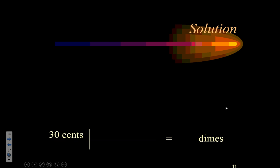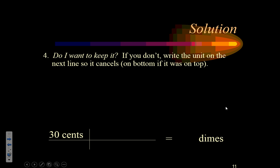Now, the key to this whole process is really the solution. And that's steps four, five, and six. Step four is a question. Do I want to keep it? If you don't, you're going to write the unit that you want to get rid of on the next line so that it cancels. So in the case of 30 cents, the it is a unit. That's really important that you need to understand. The it here is the unit. It's not 30 cents. It's cents.